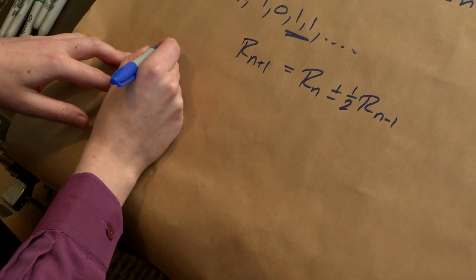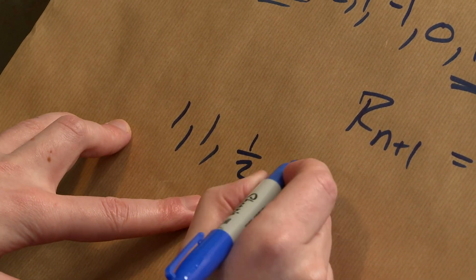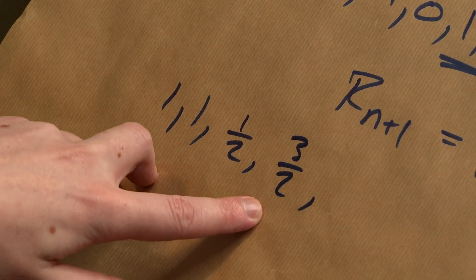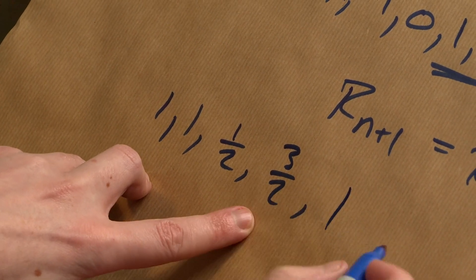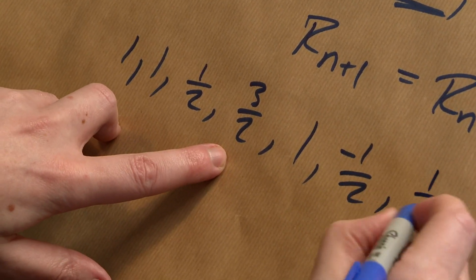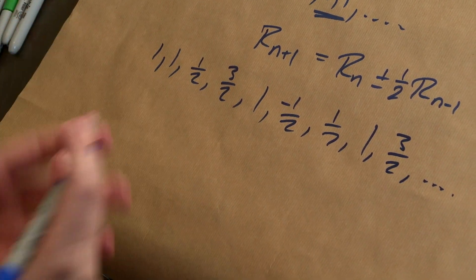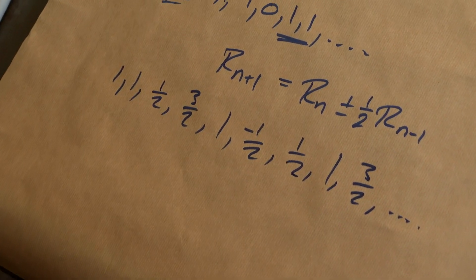So what's going to happen now? Is it going to grow? Is it going to die off? Is it going to be periodic? In this case, this is something that actually tends to zero — so this is dying. For example, starting with a one and a one, the next value would be a half, then three halves, then maybe a one again, then minus a half, a half, a one, three halves, depending on what values you're getting. But over time, this is going to tend towards zero.